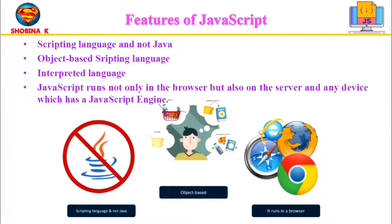The top features of JavaScript: first, it is a scripting language and has nothing to do with Java. Initially it was named Mocha, then changed to LiveScript, and finally named JavaScript. JavaScript is an object-based programming language that supports polymorphism, encapsulation, and inheritance. It is an interpreted language that does not need to be compiled. JavaScript runs not only in the browser but also on a server and any device with a JavaScript engine.